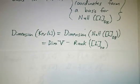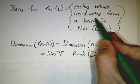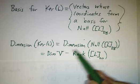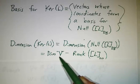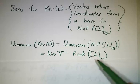And the dimension of the kernel, well, that's the same as the dimension of the null space because the bases correspond. And we know the dimension of a null space: it's n, which is the dimension of V, minus the rank of the matrix.